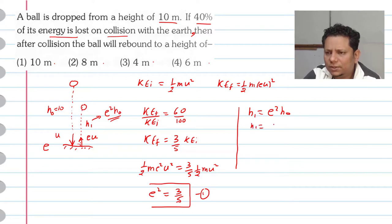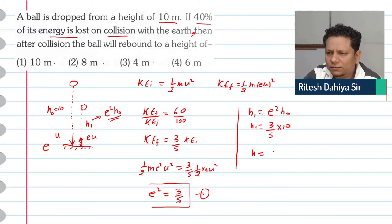H1 equals 3/5 multiplied by 10, which equals 6 meters.